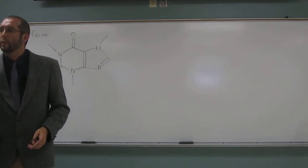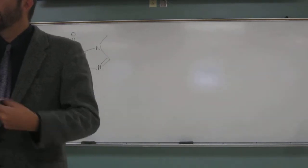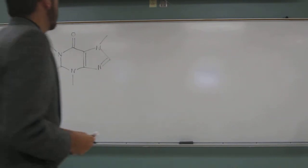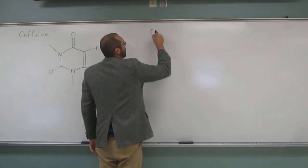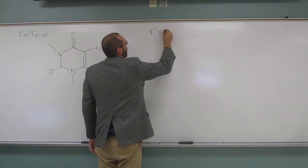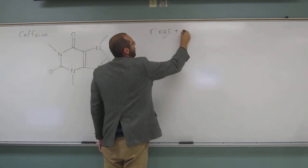We could translate the structure to the molecular formula and use that formula. But remember, degrees of unsaturation are effectively only the number of rings plus the number of pi bonds.